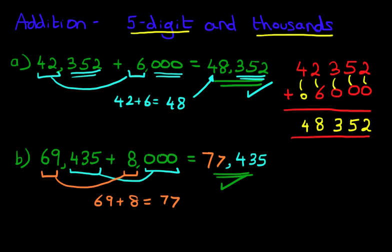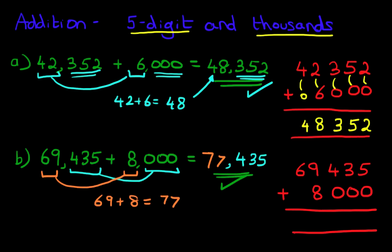Now let's do the same question in the vertical format just to make sure that we've got it right. 69,435 plus 8,000. Let's put a nice big equal sign. Let's switch back to yellow and let's do the addition.